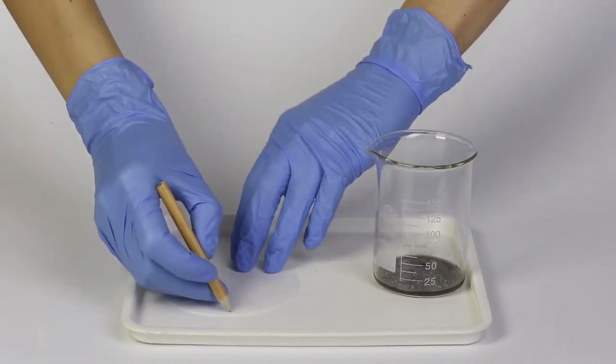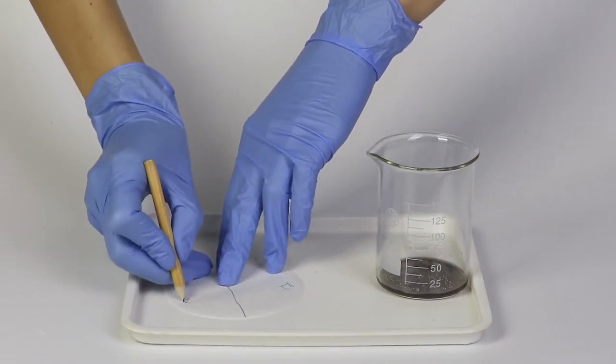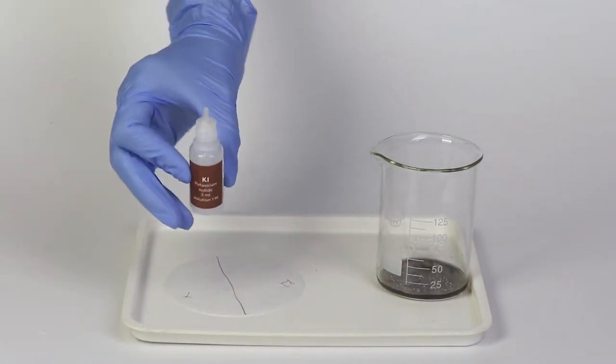Now, take a sheet of filter paper and draw a pencil line down the middle. Label one side KL for potassium iodide and the other T for thymol blue.